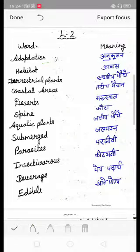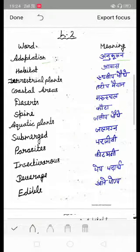Next is your word meanings. Here are your word meanings. Number one is adaptation means anukoolon, habitat means awas, terrestrial plants means sthaliya podhe, coastal areas means tattiya maidan, deserts means marusthal, spine means kata.